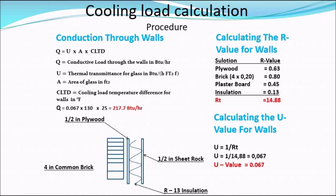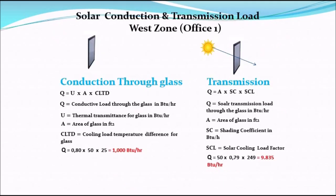Now let's calculate the conduction load through the glass. We use the same formula: Q = U × A × CLTD, where Q is the conductive load through the glass, U is the thermal transmittance for glass, A is the area of glass in square feet, and CLTD is the cooling load temperature difference for glass. Plugging in the numbers gives a total conduction load of 1000 BTU/hr through our glass.